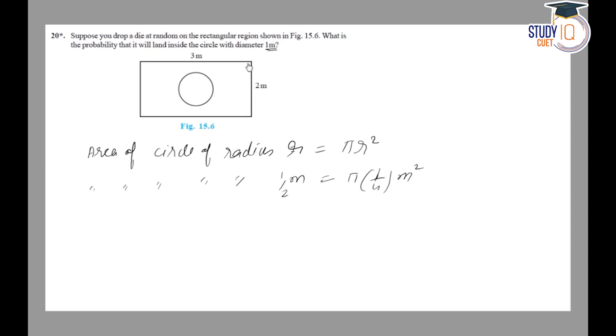Now we need the rectangle area. Area of rectangle of sides L and B is equal to L times B. The rectangle has sides 2 and 3 meters, so the area is 2 times 3 equals 6 square meters.